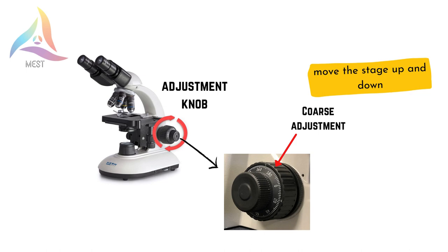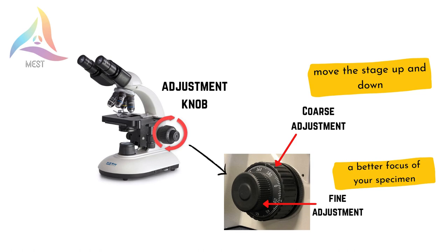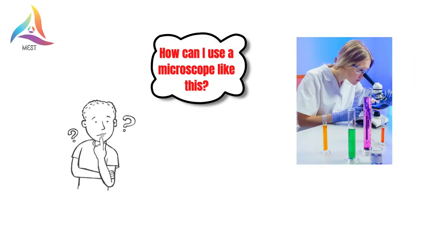The coarse adjustment knob is used for initial focusing and only with the low power objective. The fine adjustment knob is a slow but precise control, used to get a better focus on the image when viewing at higher magnifications.